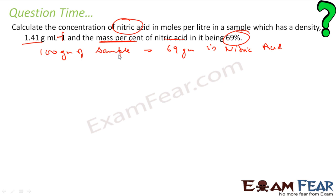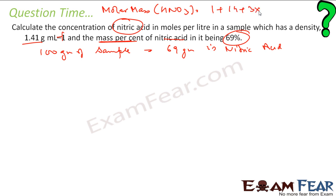Since things are in moles, let's find the molar mass of nitric acid. Molar mass of HNO3: hydrogen is 1, nitrogen is 14, oxygen is 3 times 16. That is 63 grams per mole. So 63 grams per mole is the molar mass of nitric acid.